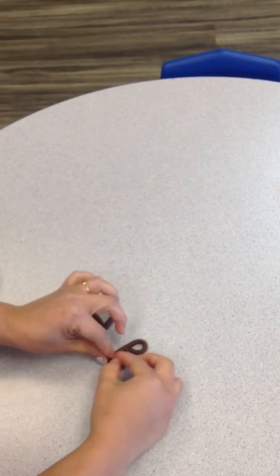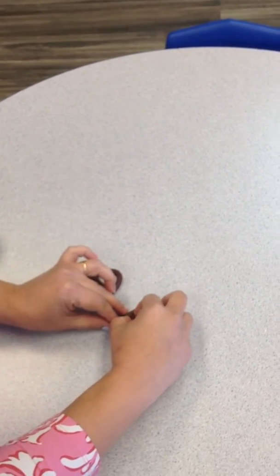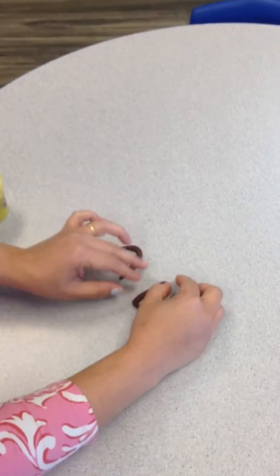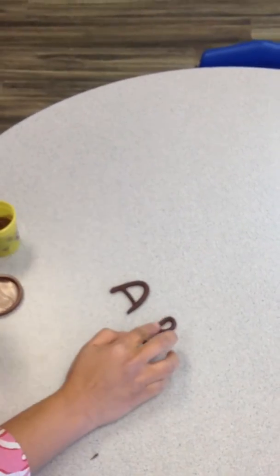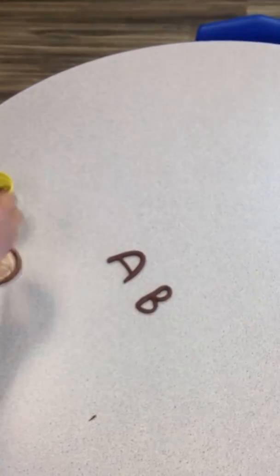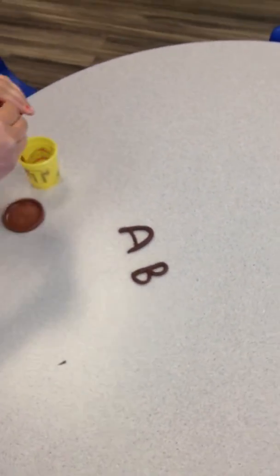B makes the sound bah. Baba bear, right? B makes the sound bah. Baba bear. B for boy.